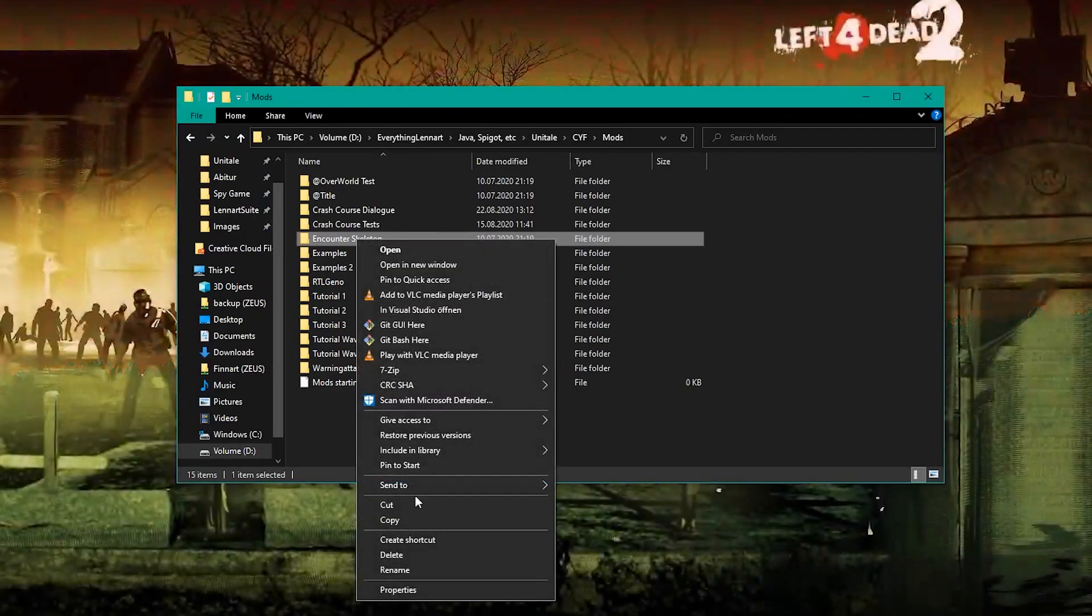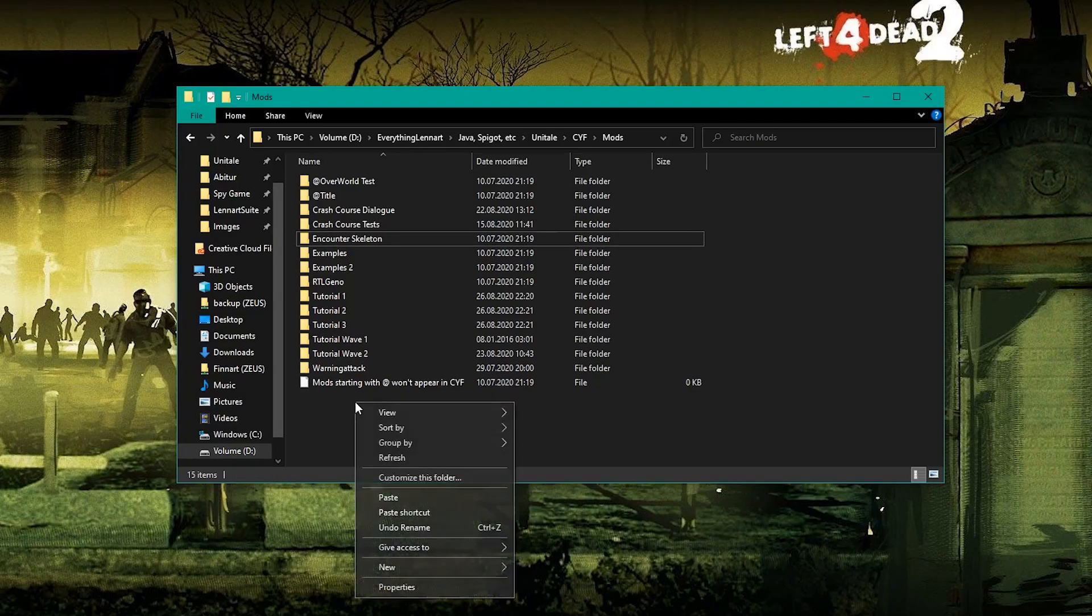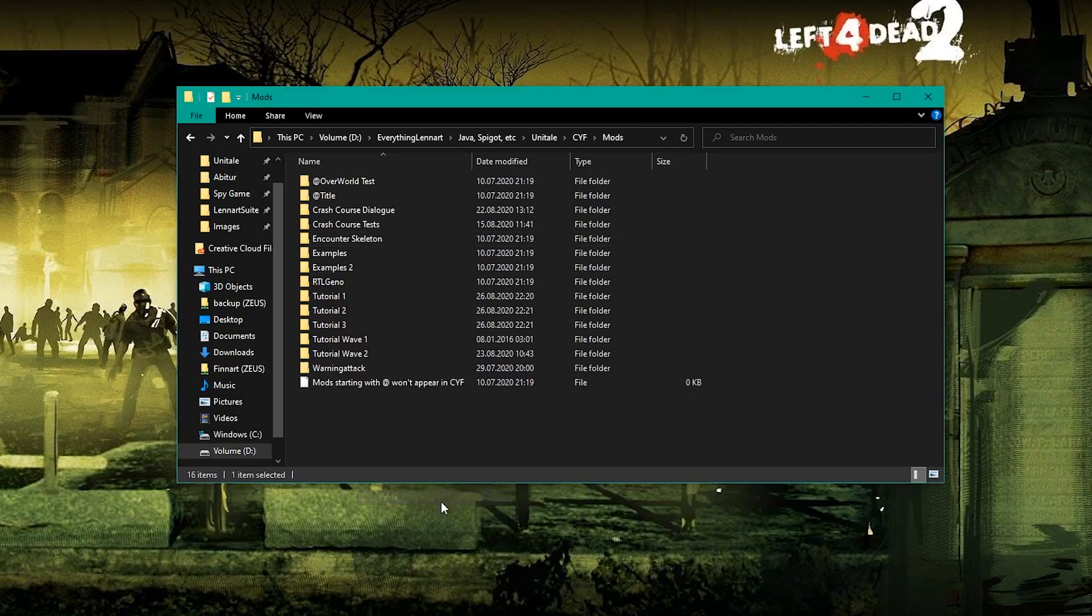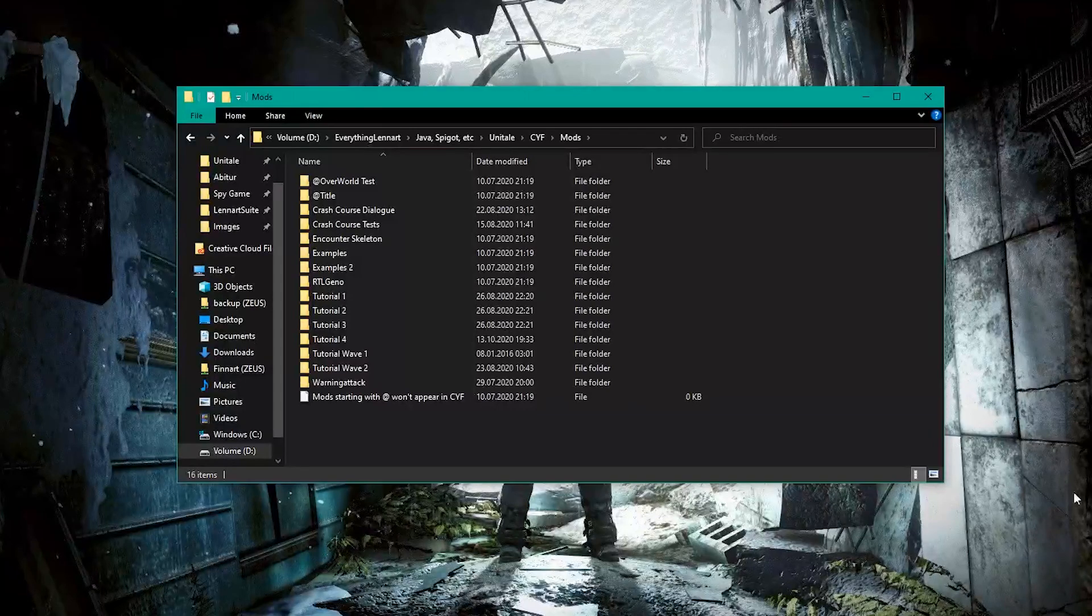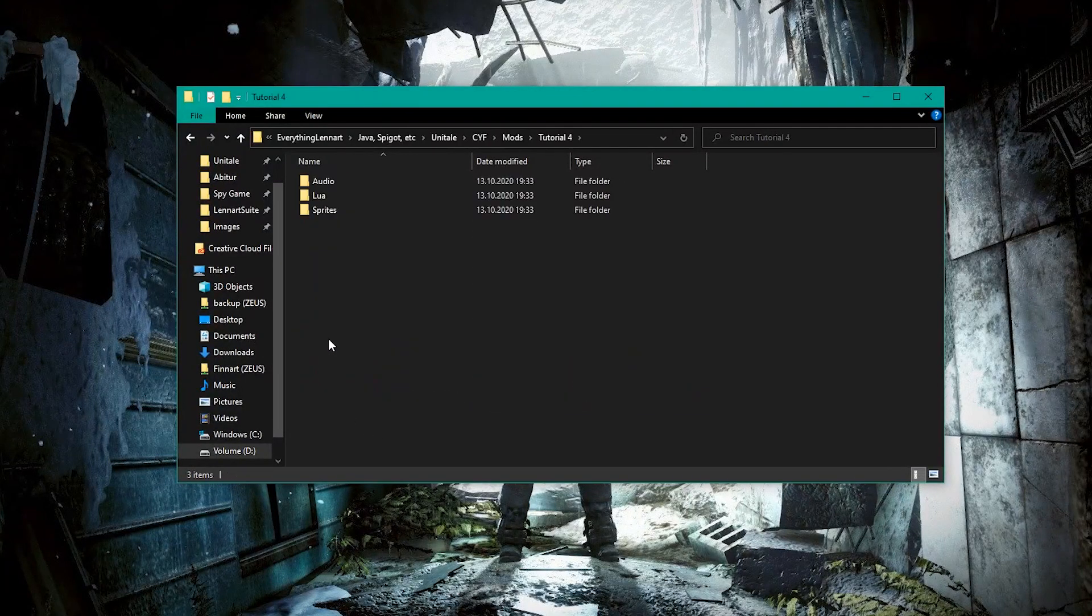That's a long enough intro, let's finally start coding. Like the tutorials before, it's best to copy the Encounter Skeleton mod and change it instead of changing the original. What are wave scripts and where can you find them? Great question, creator. First, the where. Wave scripts are located in your Waves folder, which is inside of your Lua folder.